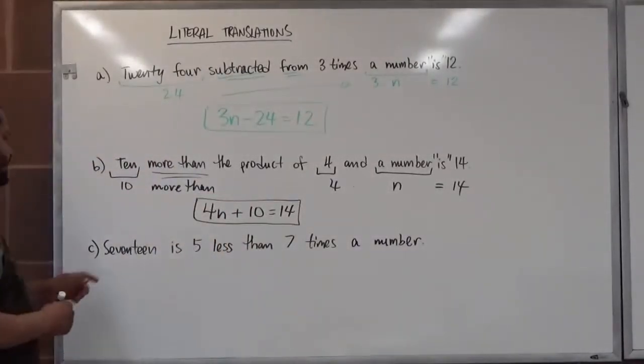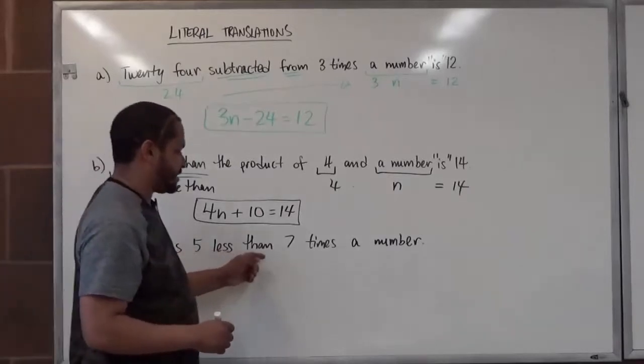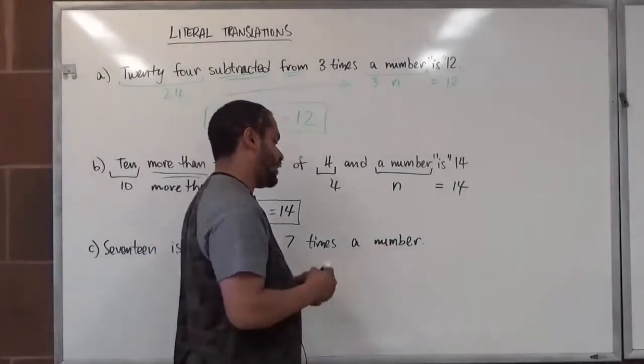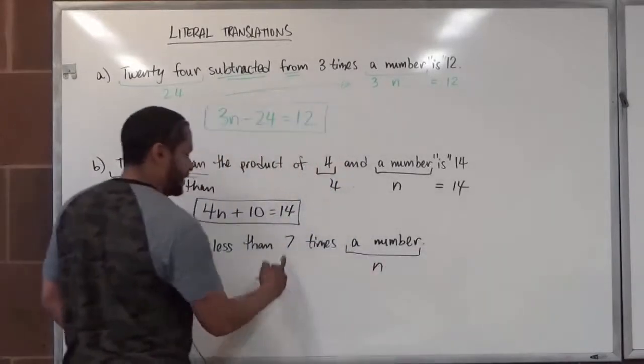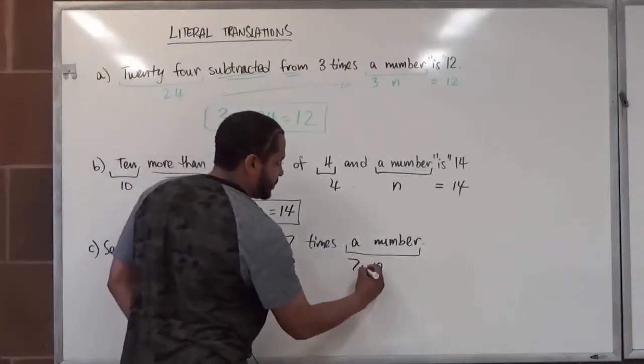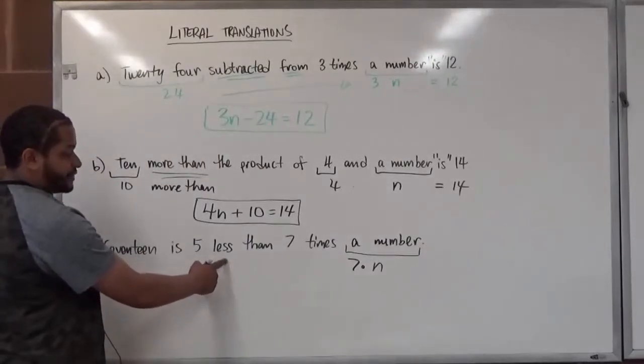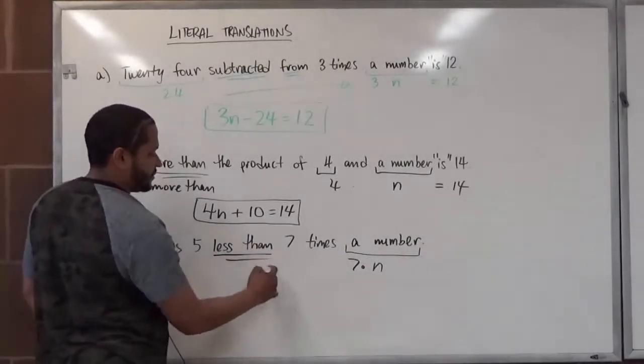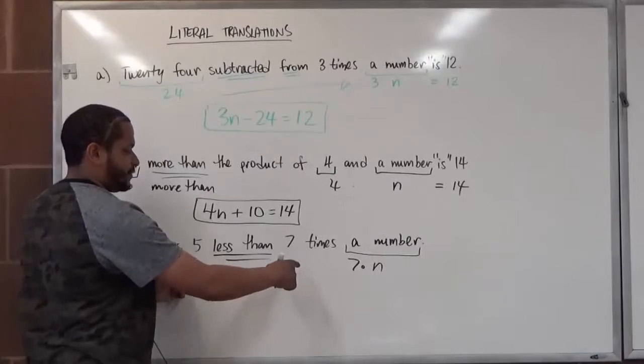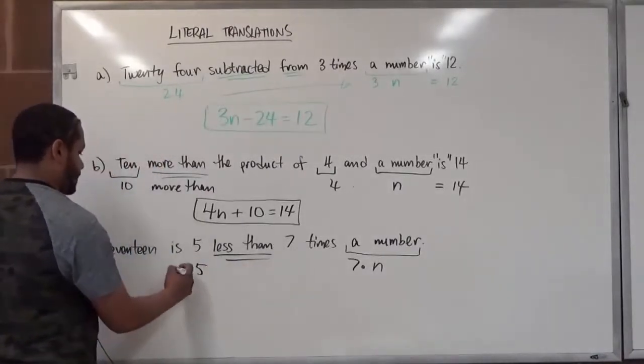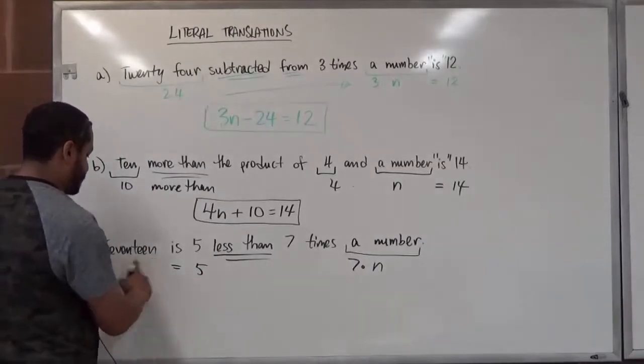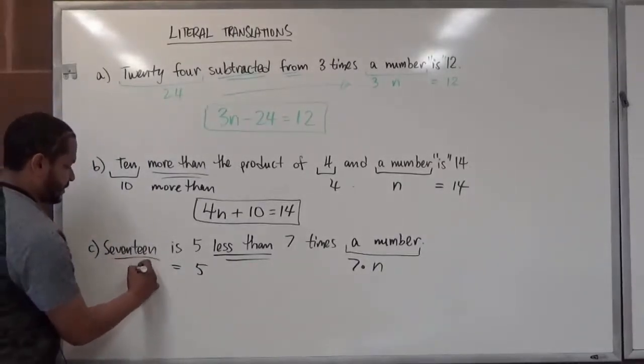For the last one here, we have 17 is 5 less than 7 times a number. Again, the words 'a number' will translate to perfectly n, and this is saying 7 times that number. And here, again, we have a post-operation of 'less than,' which means we're going to swap the two on the left and right of the 'less than,' and switch them around. We have here the 5, 'is' is the equal symbol, and 17 here is just the number 17.